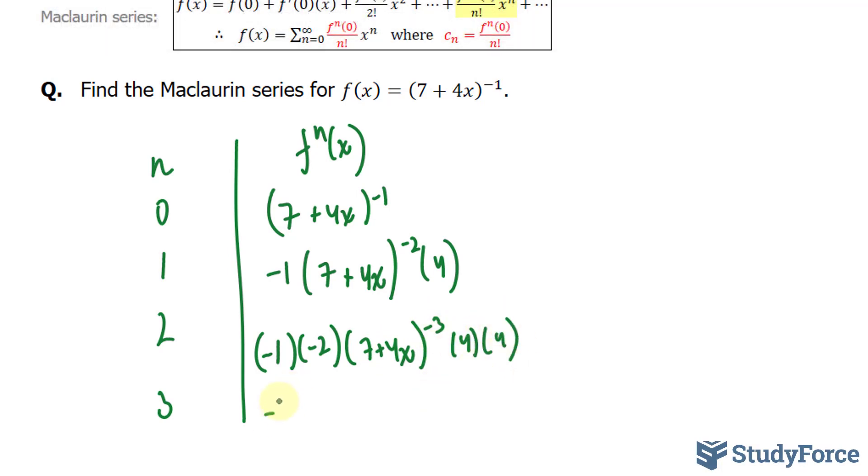And the third derivative will be negative 1 times negative 2 times negative 3, bracket 7 plus 4x raised to the power of negative 4, 4 times 4 times 4. Now that we have four terms for our expansion, I'll create a third column where I will evaluate these when x is equal to zero.